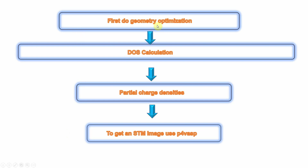First, do the geometry optimization of your system. Then do the DOS calculation — this is the second step. Then the third step: you have to do the partial charge densities calculation. Here you have to create your INCAR file for partial charge density. You have to put the DOS calculation folder, then remove that DOS INCAR file and put the partial charge INCAR file in the same folder and run the calculations to get the partial charge densities. Then we can get our STM images using V4 VASP.